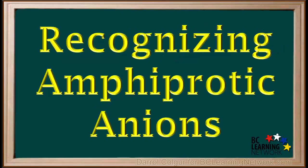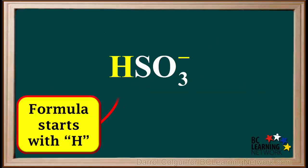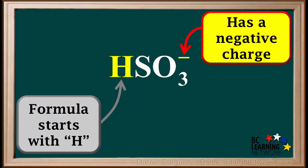It is important to be able to recognize amphiprotic anions. Here's how we do it. Firstly, the formulas for amphiprotic anions always start with H — it may be just 1H or H2. The second thing is, amphiprotic anions always have a negative charge — it could be just negative 1 or negative 2.